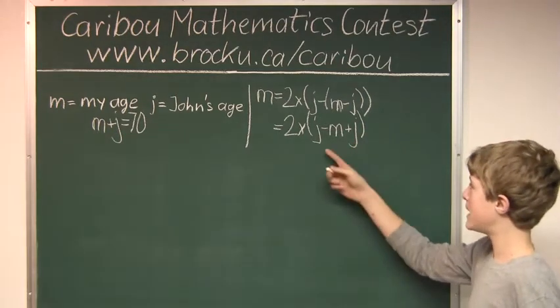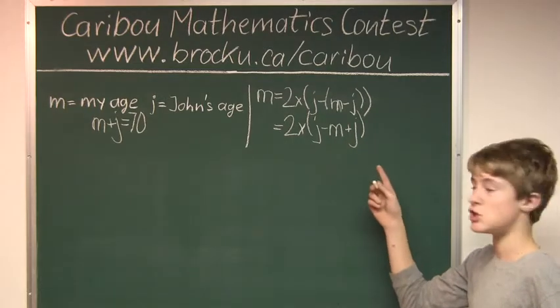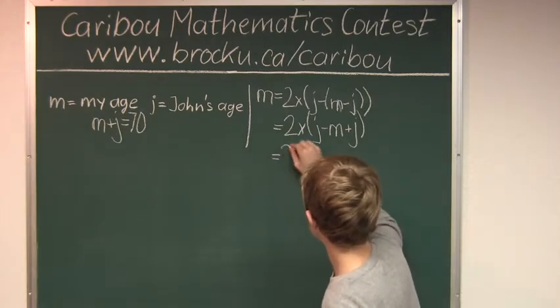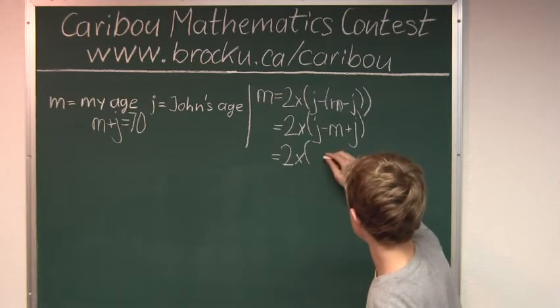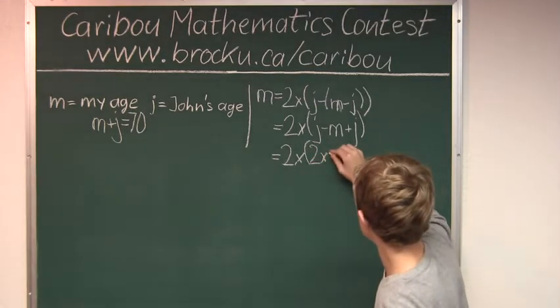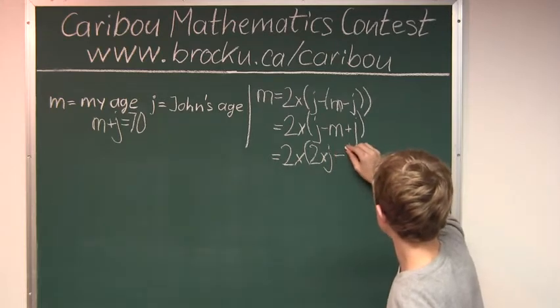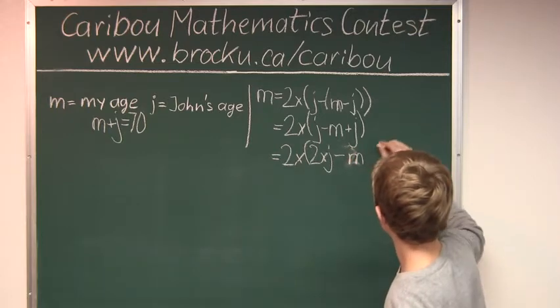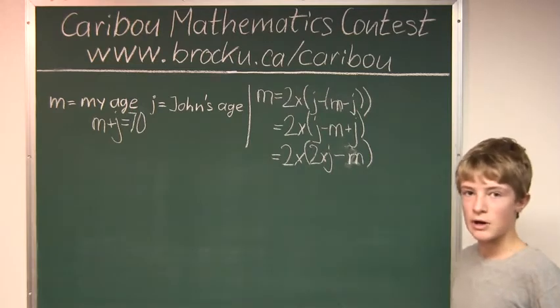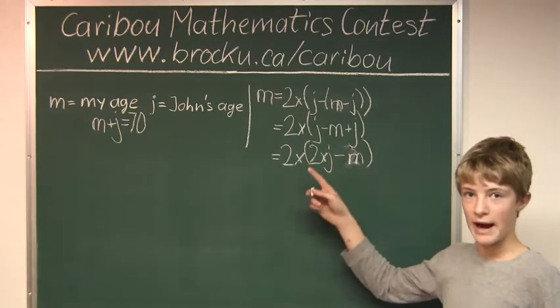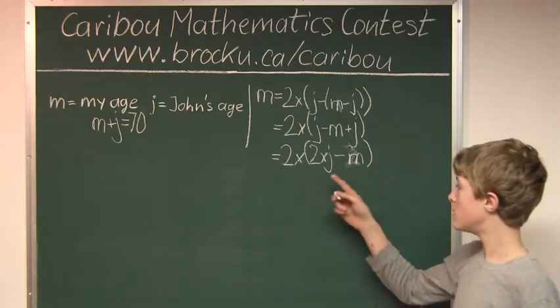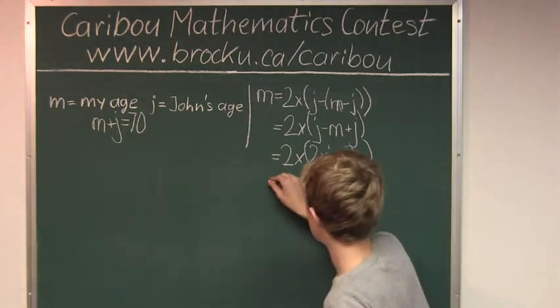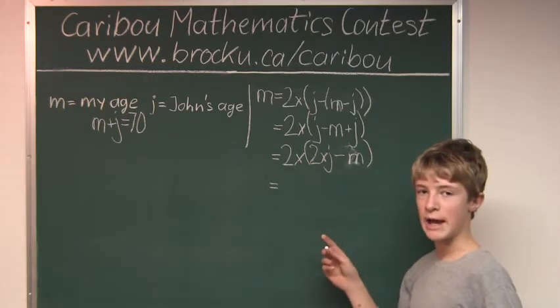We can simplify this by just adding up j plus j which is 2 times j and then subtract that by m. When you have a factor in front of a bracket, you multiply that to each term. So, you would do 2 times 2 times j minus 2 times m. And that would just be 4j minus 2m.